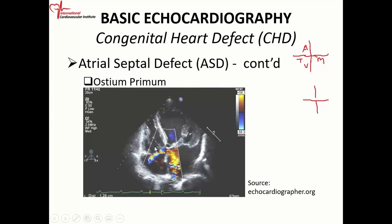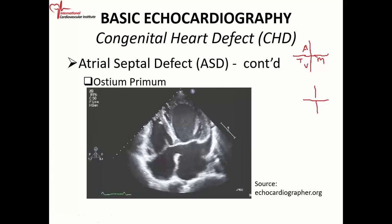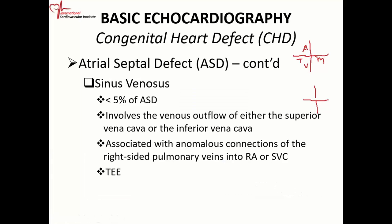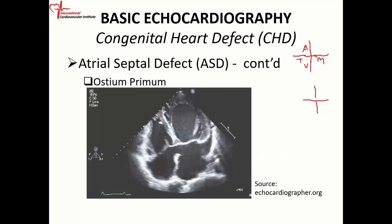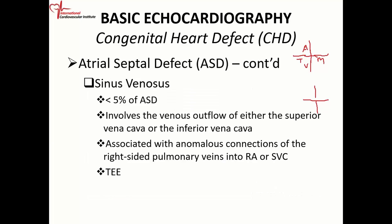You can see that there is flow across the defect, and there will be mitral regurgitation because of the cleft in the anterior mitral leaflet.